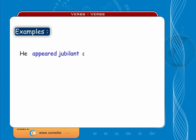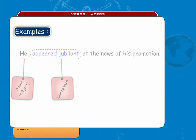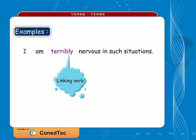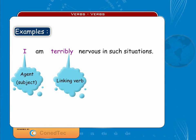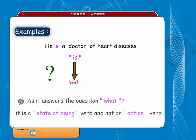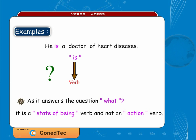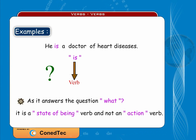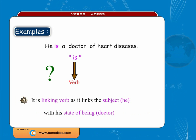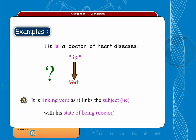In 'He appeared jubilant at the news of his promotion,' 'appeared' is the linking verb. In 'I'm terribly nervous in such situations,' 'terribly nervous' is linked by the verb. In 'He is a doctor of heart diseases,' 'is' answers the question what — it is not an action verb but a state of being verb. Therefore, it is not a transitive verb but a linking verb, as it links the subject 'he' with the state of being 'the doctor.'